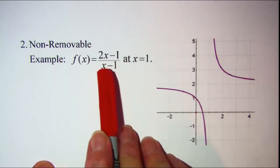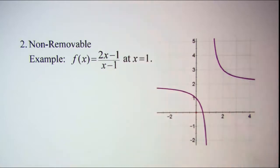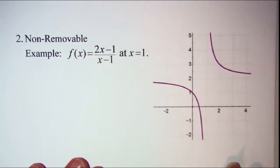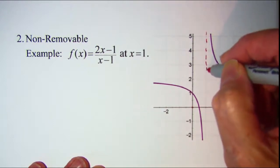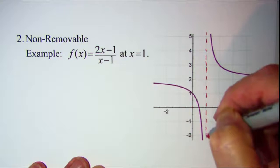Now in this case we can't factor or in some way remove that x minus 1 expression in the denominator that's causing the discontinuity and so you see that the graph on this one is not a hole but rather asymptotes at x equals 1.